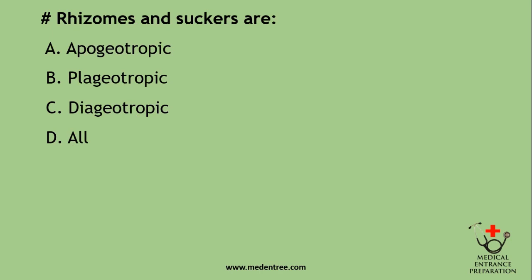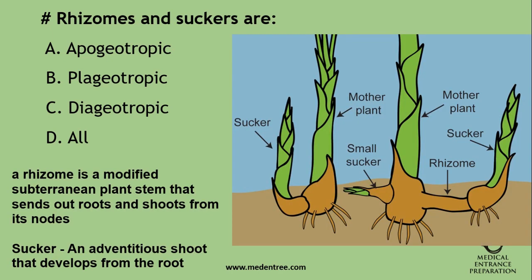Rhizomes and suckers are: apogeotropic, plagiotropic, diageotropic, or all? A rhizome is a modified subterranean plant stem that sends out roots and shoots from its nodes. From the rhizome, the sucker arises — it is an adventitious shoot that develops from the root. This is diageotropic, meaning growing at 90 degrees to the main axis of the plant.